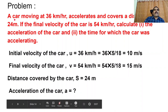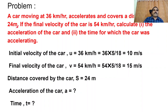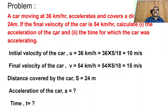A car moving at 36 km per hour accelerates and covers a distance of 24 meters. If the final velocity of the car is 54 km per hour, calculate the acceleration of the car and the time for which the car was accelerating.